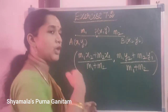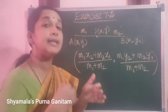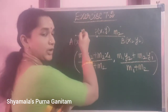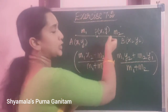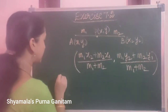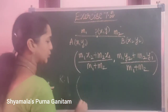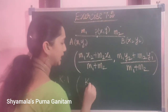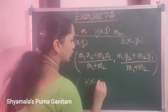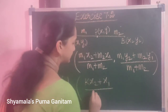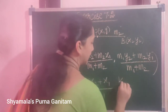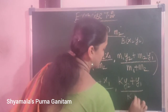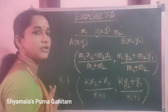The same M1:M2, for our convenience, we will be taking it as K:1. So K value is instead of M1, and 1 for M2. So if it is dividing in the ratio K:1, just replace M1 and M2 by K and 1. You will get the formula: KX2 plus X1 divided by K plus 1, and KY2 plus Y1 divided by K plus 1. These are the formulas we will be using.